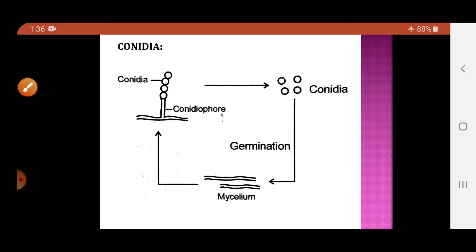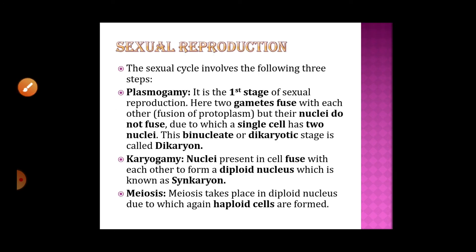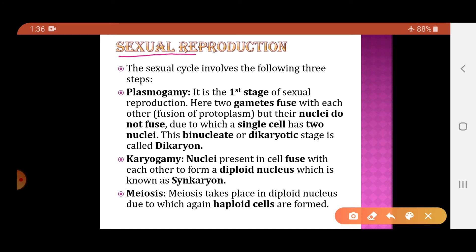Another method of asexual reproduction is by conidia. The main fungal body has a filament called a conidiophore whose tip bears a group of spores called conidia. These conidia are liberated into the atmosphere and under favorable conditions germinate to form mycelium, which again forms a new fungal body. The last method of reproduction is sexual reproduction.